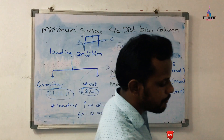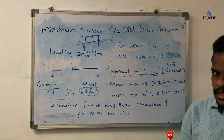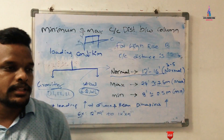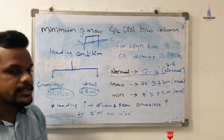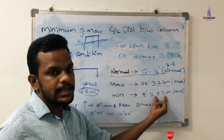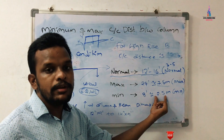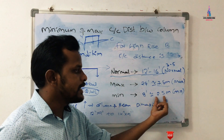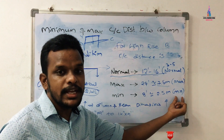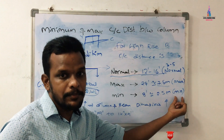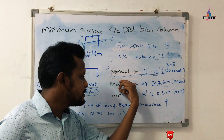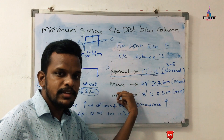The minimum center-to-center distance for a building section, as per IS codal provisions, is 8 feet, which is approximately equal to 2.5 meters. This 2.5 meters is the minimum value to consider for a minimum loading condition system. The normal, maximum, and minimum condition systems all depend upon the loading system.